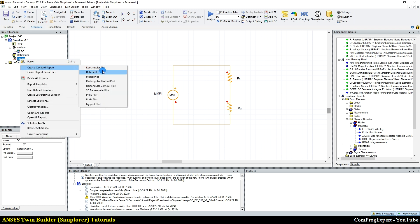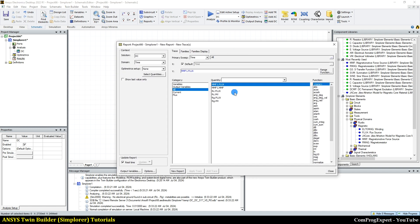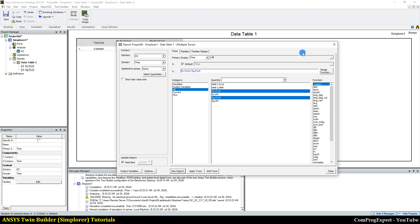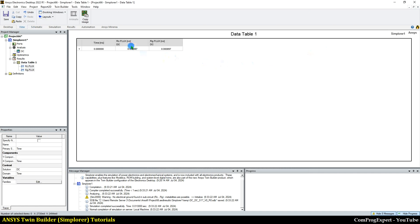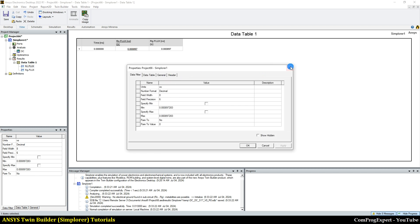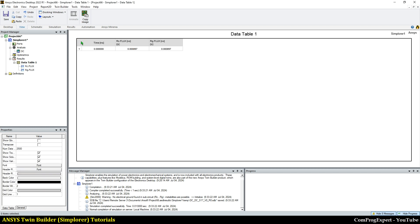We can generate a data table and plot the value of flux in RC and R gap. So here you can see the numbers. Let me increase the font size of these numbers.